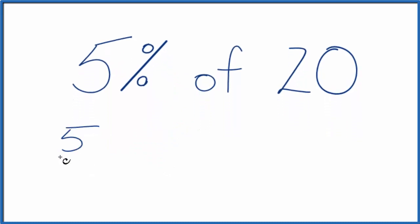So we have 5 over 100. That's the equivalent here of 5%. And the of, that means multiplication. So we're going to multiply 5 over 100 times 20.